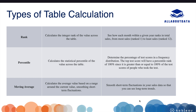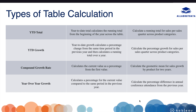Percentile is used to calculate the statistical percentile of values across the table. Moving average calculates the average based on the data present in your view. YTD total stands for year-to-date total. YTD growth calculates the percentage change from the same time period in the previous year and then calculates a running total over a year. Compound growth calculates the current value as a percentage from the first value. Year over year growth calculates the percentage from the current value compared to the same period in the previous year.